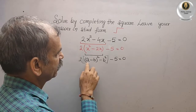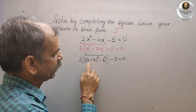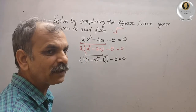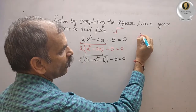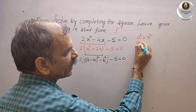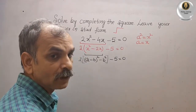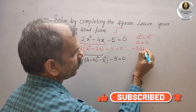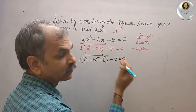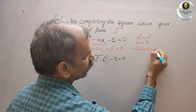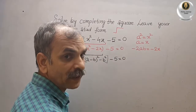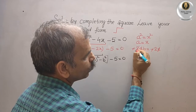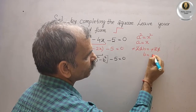Now if you compare: (a minus b) whole square has a squared, so compare a squared with x squared — we will get a is equal to x. Now compare minus 2ab with minus 2x: minus and minus cancel, a and x cancel, 2 and 2 cancel — we will get b is equal to 1.